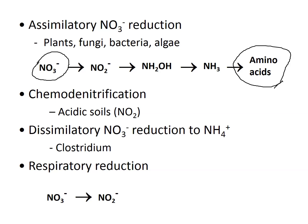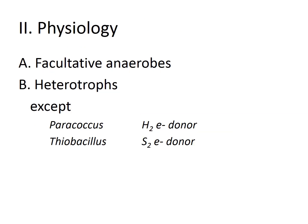Clostridium, for example, is an example of dissimilatory nitrate reduction to ammonium ion. With respiratory reduction, nitrate can be transformed into nitrite (NO₂⁻). Most microbes that can perform denitrification are usually facultative anaerobes and heterotrophs — they cannot synthesize their own carbon, except for Paracoccus and Acetobacillus, which are chemoorganotrophs.